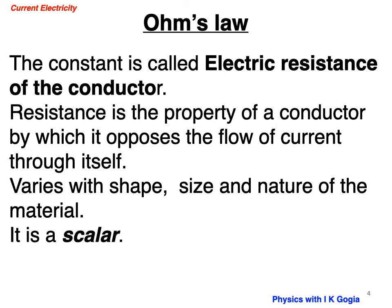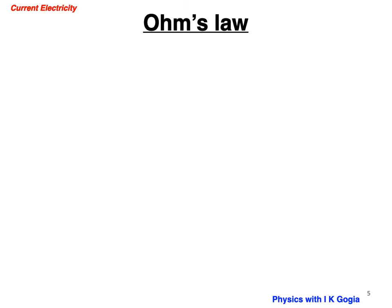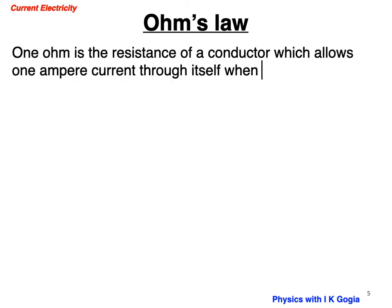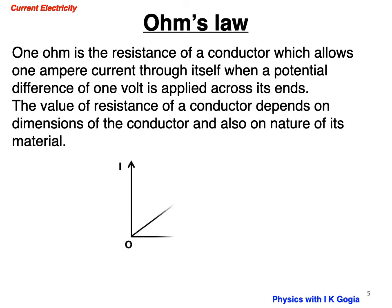It is a scalar quantity, no sense of direction. SI unit is Ohm or 1 volt per ampere. For definition of Ohm, 1 Ohm is resistance of a conductor which allows 1 ampere current through itself when a potential difference of 1 volt is applied across its ends.